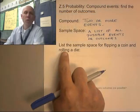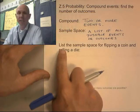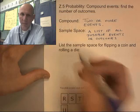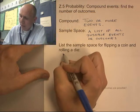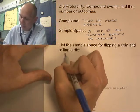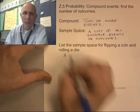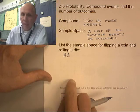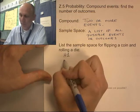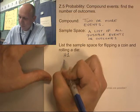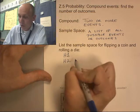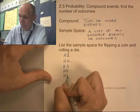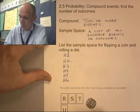I'm going to create the sample space for this compound event. List the sample space for flipping a coin and rolling a die. Let's just flip the coin first. I flip it and come up with heads. I roll the die and come up with one. That's one event — heads with one. I could have heads with two, heads with three, heads with four, heads with five, heads with six.